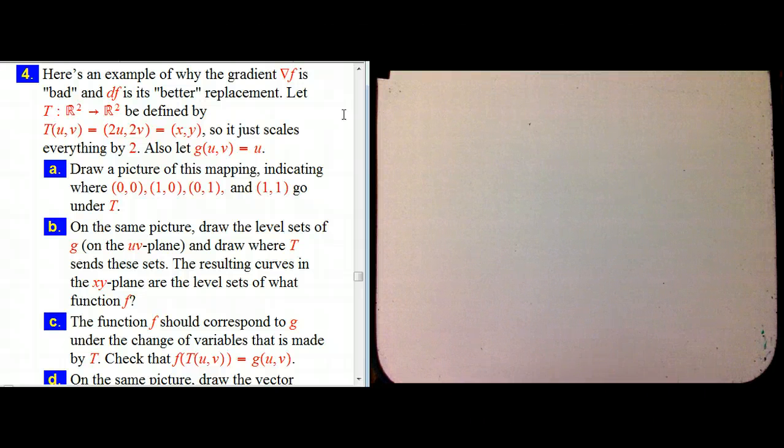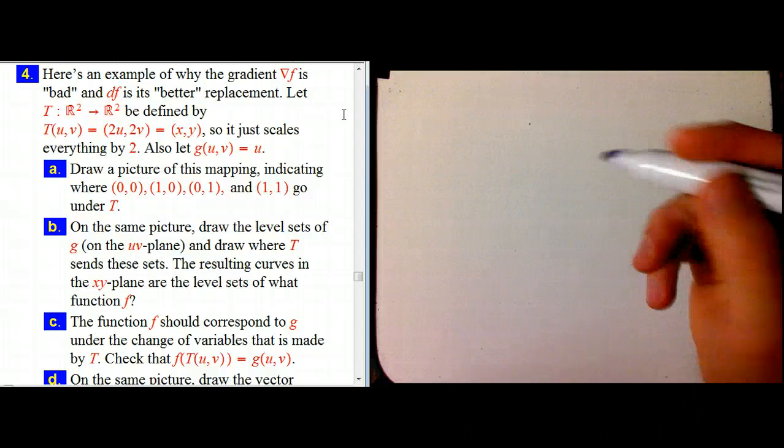This is supposed to be a sort of very simple but key example of why the gradient and df really are better. Or why the gradient, why the df is better. Why they're really different even though they seem to have the same information content. But it really is a better way to present it.